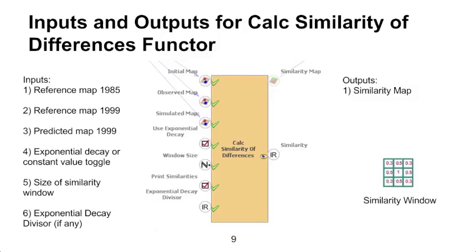The window size is simply the size of the similarity window, which must be an odd number. We will be using an 11 by 11 window. We will use the default value for the exponential divisor as well. Make sure Print Similarities is checked on, and right-click the Output Similarities score to select View Report, which will allow you to view the final similarity score.